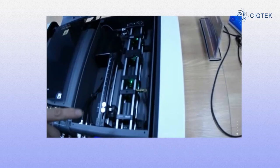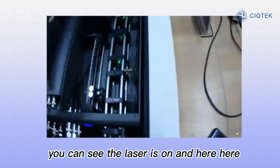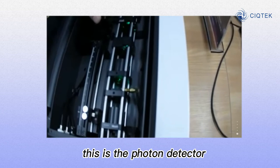Now this is the optical part. You can see the laser is on, and here is the marker wheel, this is the photon detector, and this is the magnet.